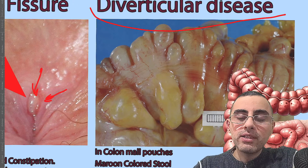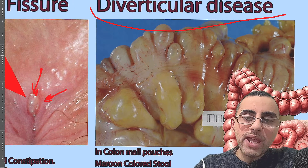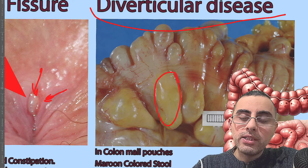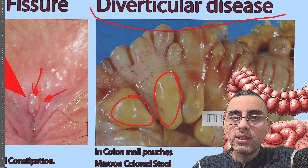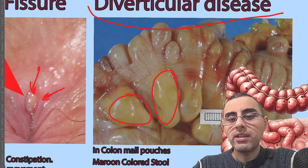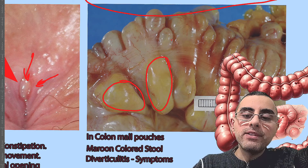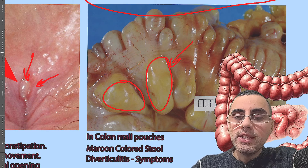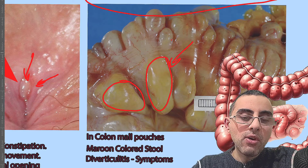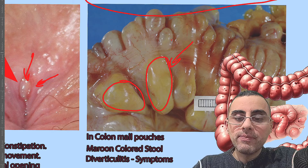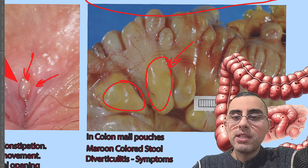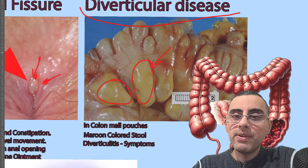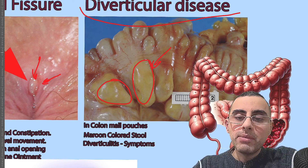The third most common cause of blood in the stool is diverticular disease — small pouches or bags inside and outside the colon. Usually it has no symptoms, but if diverticular disease becomes inflamed and bleeds, this condition is called diverticulitis. Diverticulitis typically presents with lower abdominal pain, and sometimes nausea, vomiting, or fever.